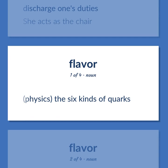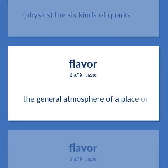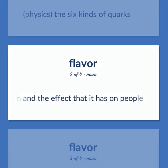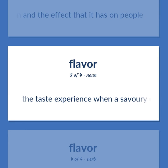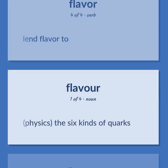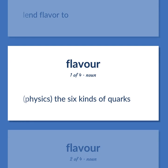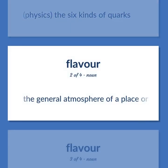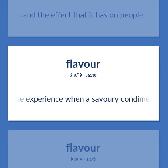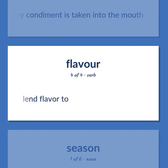Flavor: Physics — the six kinds of quarks. The general atmosphere of a place or situation and the effect that it has on people. The taste experience when a savory condiment is taken into the mouth. Lend flavor to.